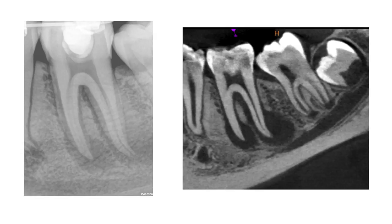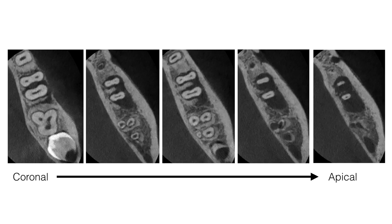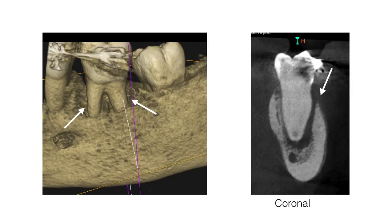A sagittal view of the CBCT scan demonstrated two large periapical radiolucencies around the mesial and distal roots, with the distal area extending right up into the furcation. This slide shows different slices of the CBCT scan through the axial plane, emphasizing the extent of the periapical pathology. A 3D reconstructed view and a coronal view also clearly illustrated the loss of the buccal bone plate, exposing the coronal two-thirds of the mesial and distal roots.